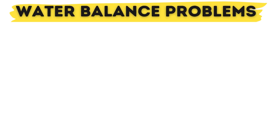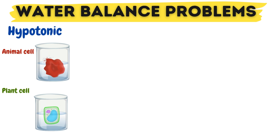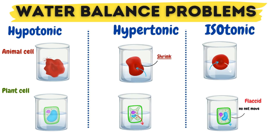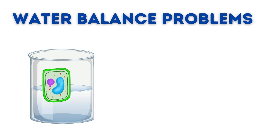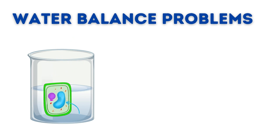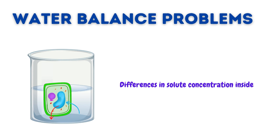Hello guys. In this video I will be discussing water balance problems with reference to hypotonic, hypertonic and isotonic solutions. So when we place a cell in a solution, the movement of water into or out of the cell can affect its size and shape. This movement is caused by differences in solute concentration inside and outside the cell, and this leads to the concepts of tonicity.